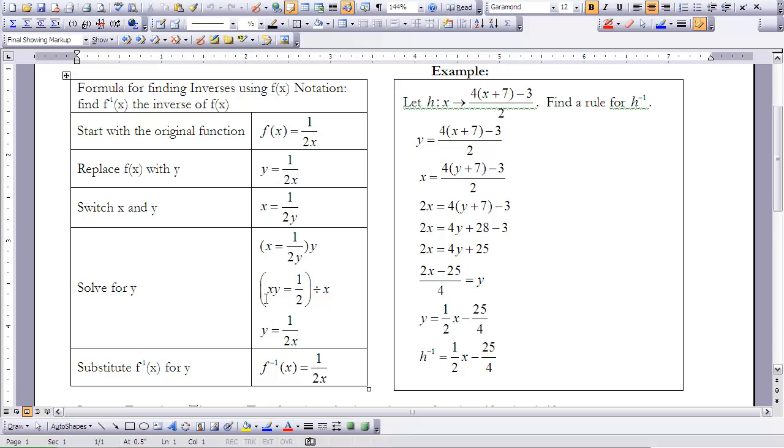We're going to multiply both sides by y. So that leaves me with xy = 1/2, divided by x, which is the same as y = 1/(2x). So we substitute f^(-1)(x), which is the inverse of x, for y. And so now we have our inverse rule.